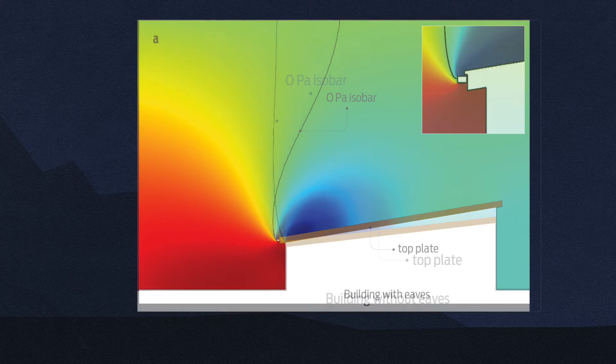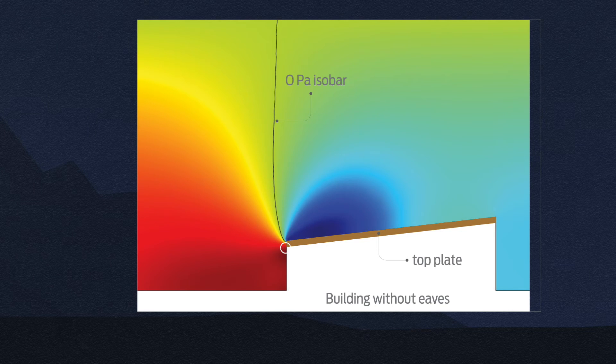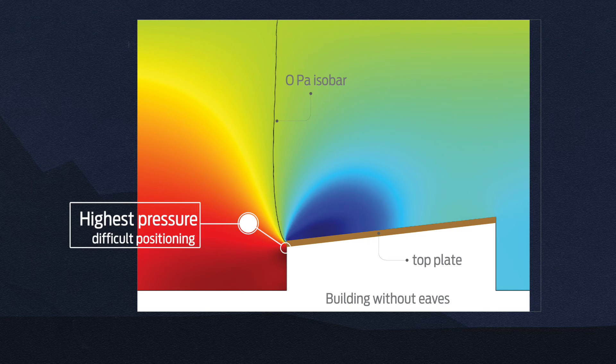Without eaves, the highest wind pressure is near or below the top plate of the wall, which makes it difficult to use for roof ventilation.